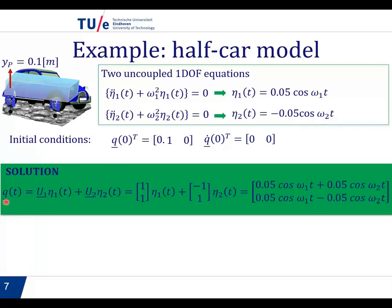The solution is to say q is U1 times eta 1 plus U2 times eta 2. U1 and U2, we know them. So in the end, we end up having these expressions. So 0.05 cos omega 1t plus 0.05 cos omega 2t for the displacement of point P. And for the other point here, which was point Q, if you recall, it's the same thing but with a minus sign there. If you want to see how this system moves in time, just plot these functions in MATLAB, and then you will see what this means.